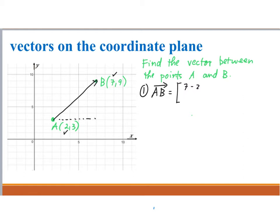It's going to be similar for the Y component. The length of that segment is the difference of the Y coordinates: 1, 2, 3, 4, 5, 6, which is 9 minus 3. And again, it's 9 minus 3 because we go from the head to the tail. So vector AB is (5, 6).